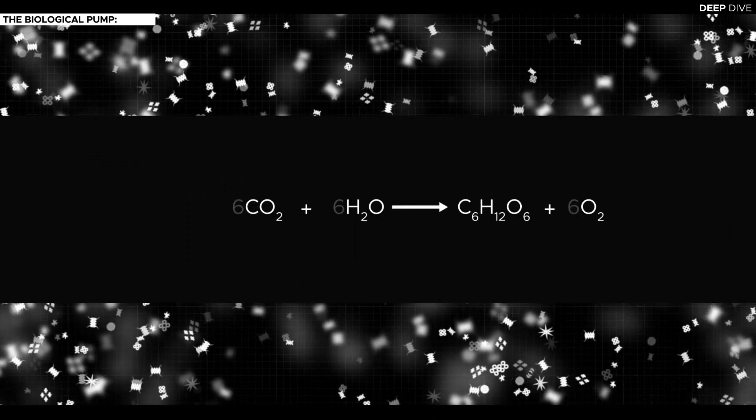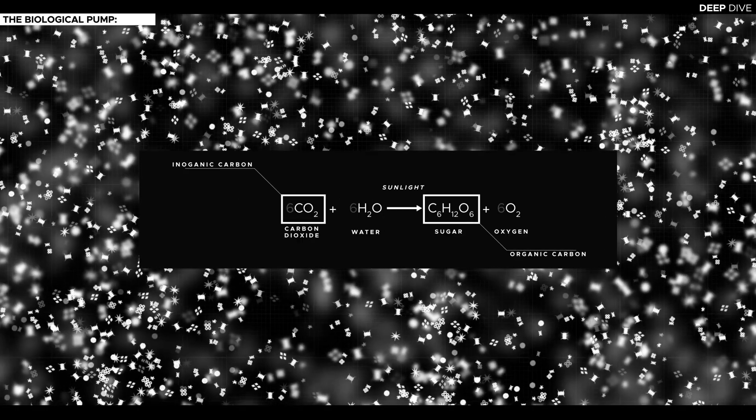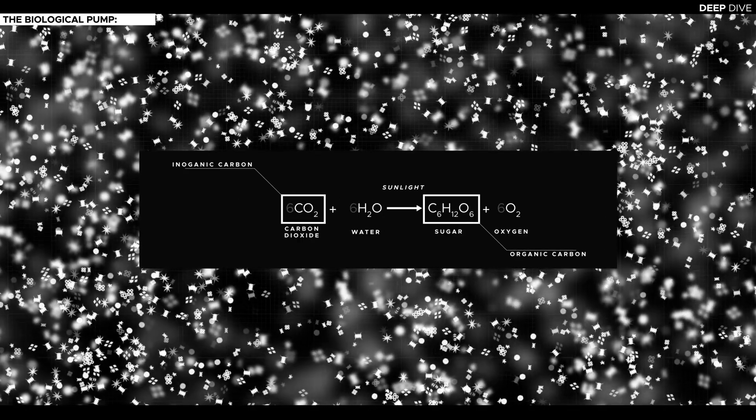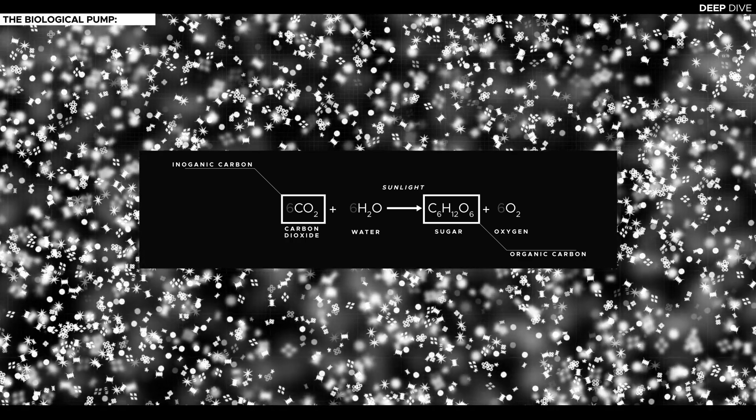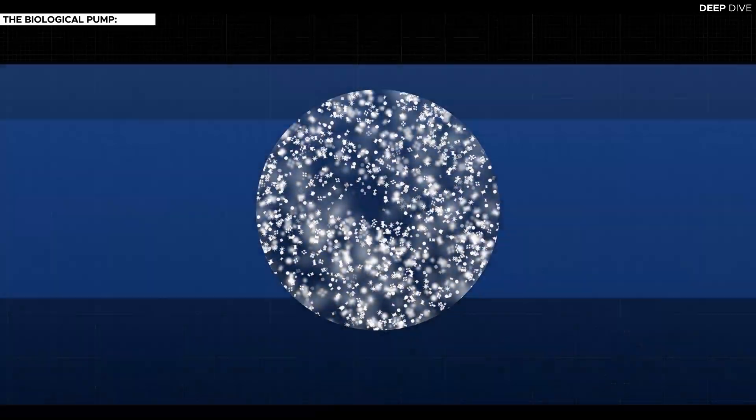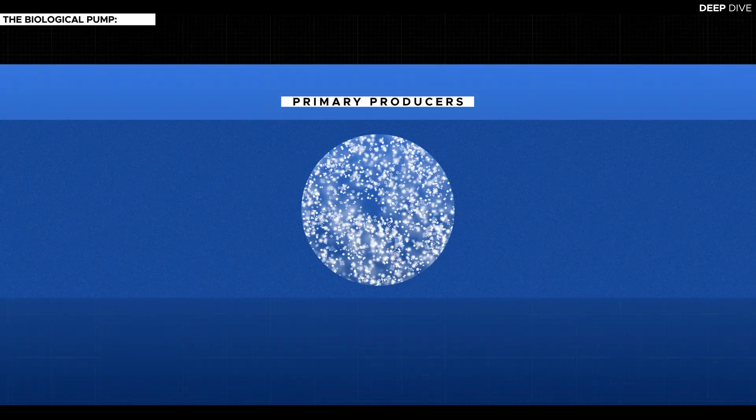Near the surface, photosynthesizing organisms such as phytoplankton use the energy from the sun to convert inorganic carbon, so CO2, to organic carbon. This primary production which amounts to roughly 100 gigatons of carbon per year fuels the entire ocean ecosystem.